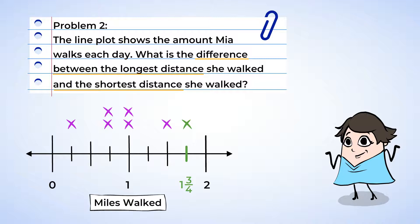Now, to find the shortest distance, this is going to be the mark furthest to the left. And here it is. The mark on the first tick after the zero is one-fourth. So now we have the shortest distance of one-fourth and the longest distance of one and three-fourths. Now we can find the difference between the two numbers, and difference means subtraction.